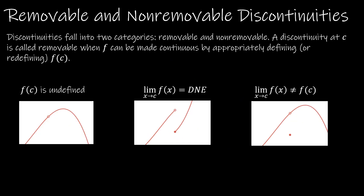Some discontinuities are considered removable and some are non-removable. If you have a function where all you have to do is define or redefine f of c, that's considered a removable discontinuity. This typically happens when you have a hole in your graph. All you would have to do is redefine that function to be f of c at that point — same thing if this is c, all I'd have to do is redefine f of c to be that point.